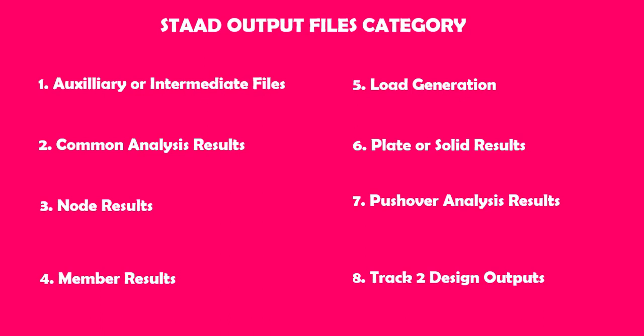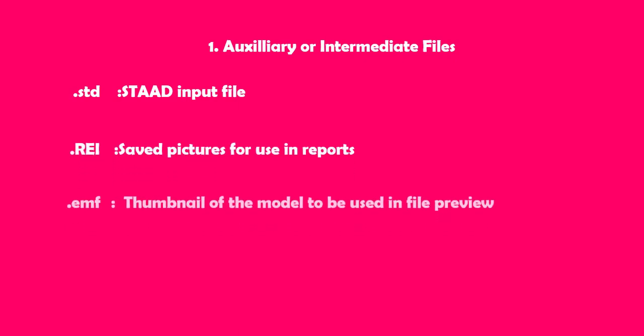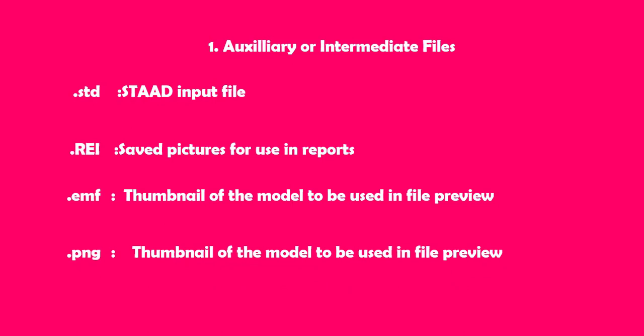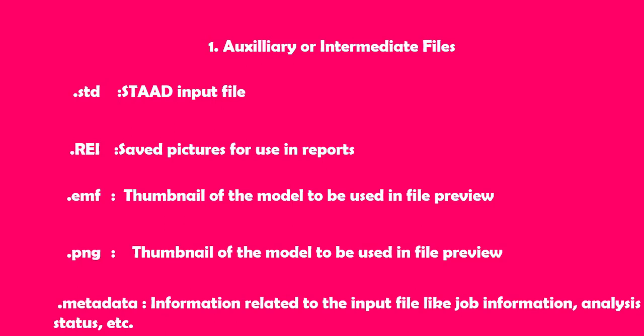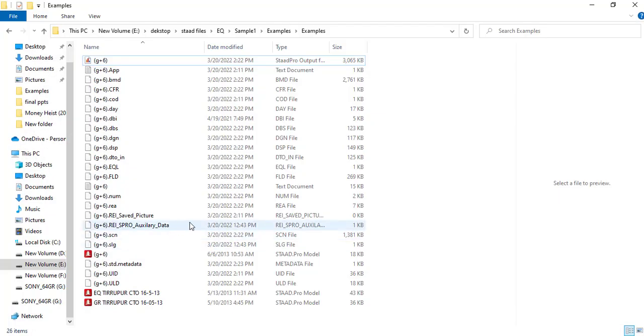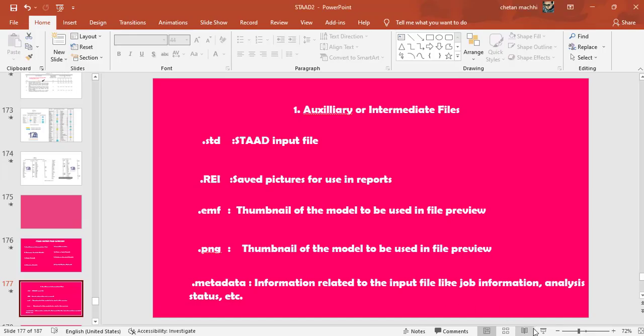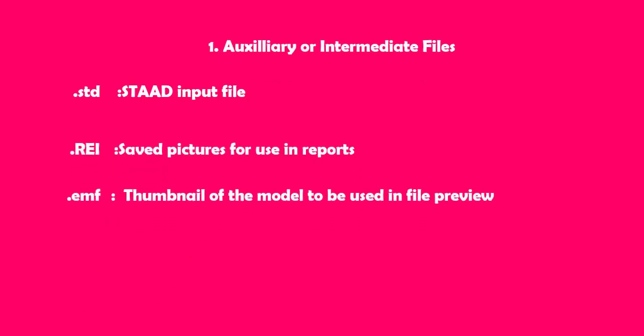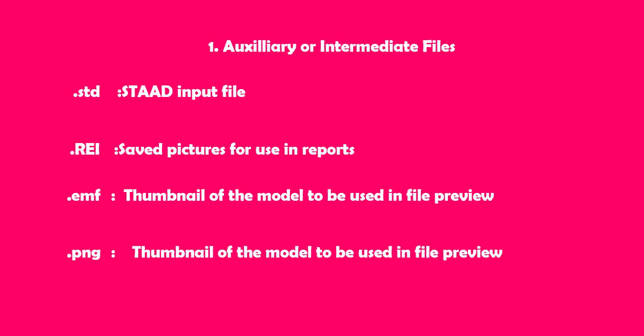Starting with the auxiliary or intermediate data files, you may find the following categories. Our main STAAD file contains the .std extension, which is the main STAAD file represented with a red or blue icon depending on your STAAD version. There are also different format categories like .png, .emf, or .rei — .png and .emf represent the thumbnail of the model used in file preview, while .rei extension represents a saved picture used in your reports.